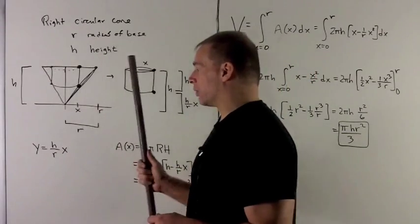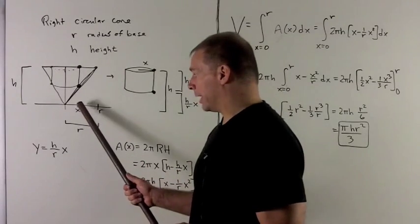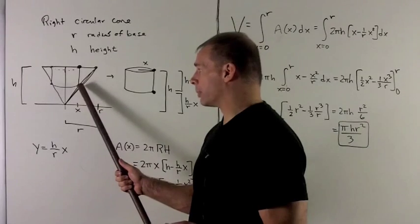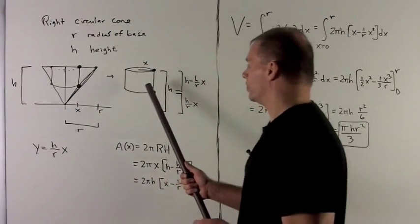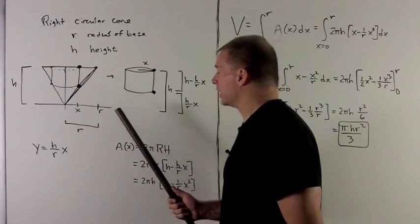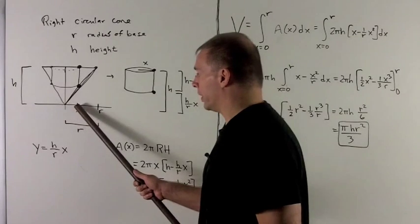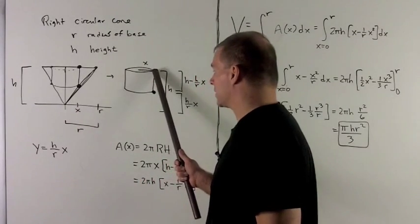We're going to rotate that line around the y-axis. At the point x, I'm going to pull out the representative cylinder. So we pull it out and put it over here. Let's notice a few things. First, the radius of the cylinder, since I'm pulling it out at x, is going to be x.